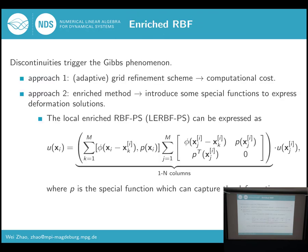Because the non-local problem can describe discontinuous problems, in this part we will consider such a case. Discontinuities trigger the Gibbs phenomenon, and there are two common approaches to deal with this. The first approach is the grid refinement scheme — we only increase the number of points, but sometimes this method costs a lot of computational time. In fact, we used this method to obtain some good results, but since I want to introduce another approach, those results are not shown here. If you are interested, after this talk I can show you the results in my paper.